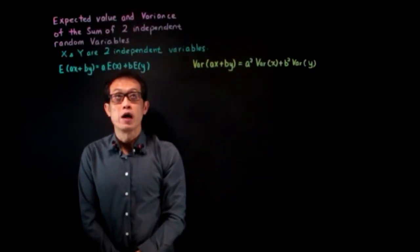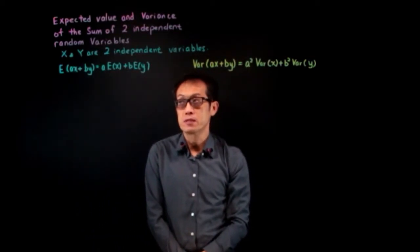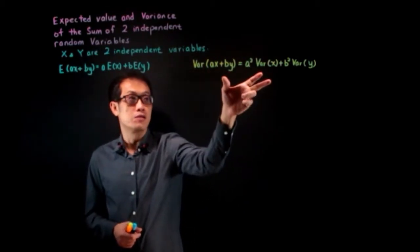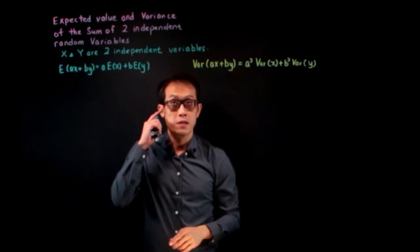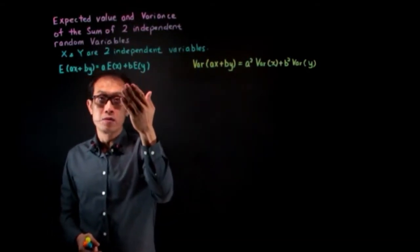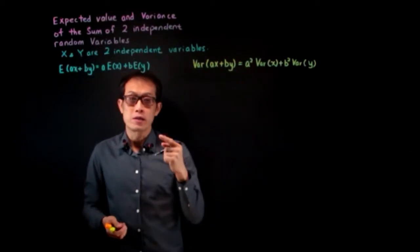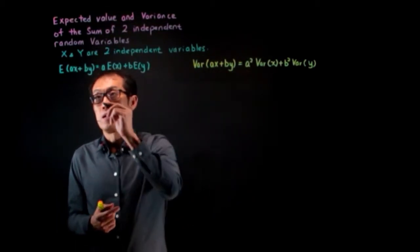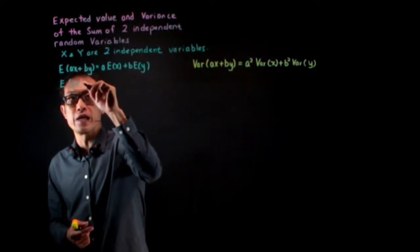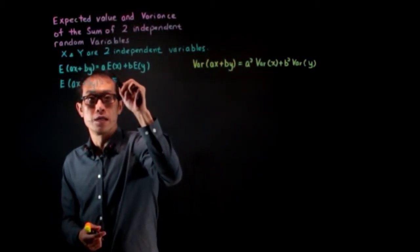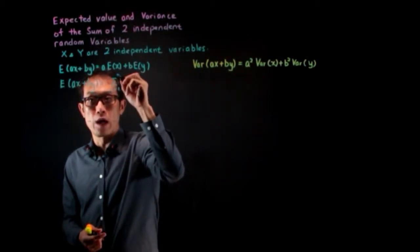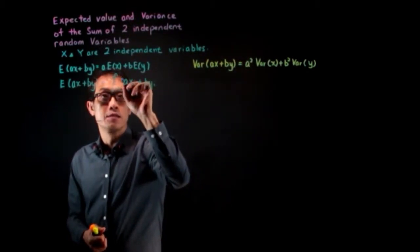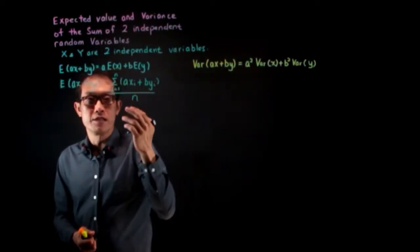Today we are on the topic of expected value and variance of the sum of two independent variables. Let X and Y be two independent variables. I will show you the proof of these two commonly used formulas. The expected value is the mean, so we can rewrite this formula: expected value of aX plus bY will equal the summation from i equals 1 to n of aX_i plus bY_i over n. This is the formula for average.